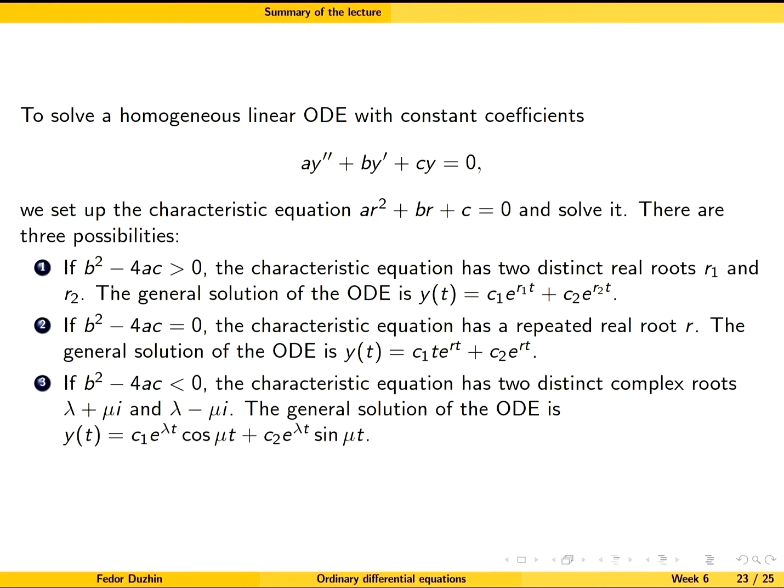Finally, the discriminant could be negative, so then we have two distinct complex roots. The general solution is a combination of cosine and sine. Inside cosine and sine we have the imaginary part of the complex roots, times the exponential function. In the exponent we have the real part of the complex root.